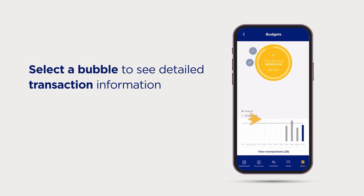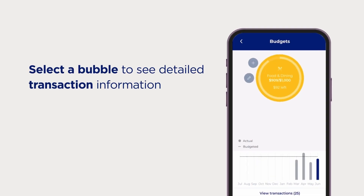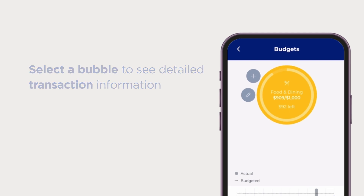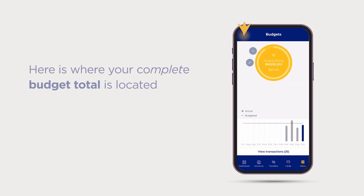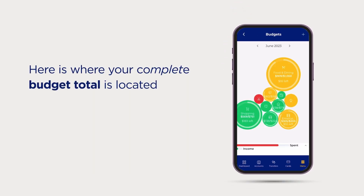Select a bubble to see detailed transaction information. Here's where your complete budget total is located and your projected income.